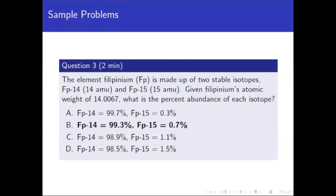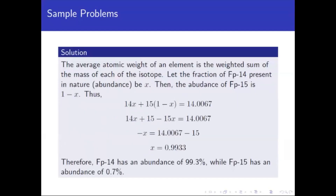Number three: the element Philippineum (FP) is made up of two stable isotopes, FP14 and FP15. FP14 has a mass of 14 AMU and FP15 has a mass of 15 AMU. Given Philippineum's atomic weight of 14.0067, what is the percent abundance of each isotope? Let X be the fraction of FP14 present in nature.